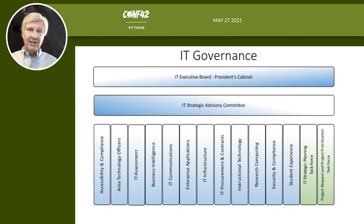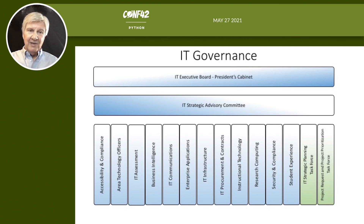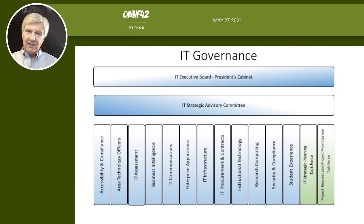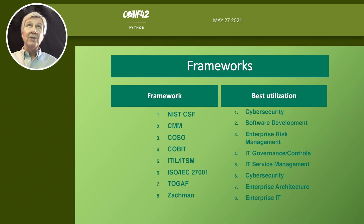For IT governance, the two cornerstone elements are strategic planning — you need an IT and a cyber strategic plan — and a way to request projects and tasks. The key questions: what is the strategic plan for the organization, how does the IT and cybersecurity strategic plan dovetail into it, and how do projects get started, run, and closed?